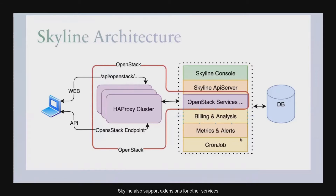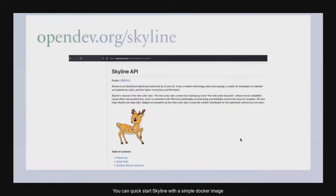Skyline also supports extensions for other services — for example, billing, metrics, cron jobs, and so on. You can quick-start Skyline with a simple Docker image, which includes both the Skyline API server and console. Please find them at opendev.org/Skyline.